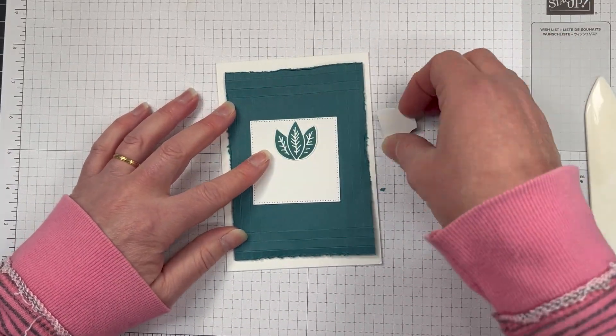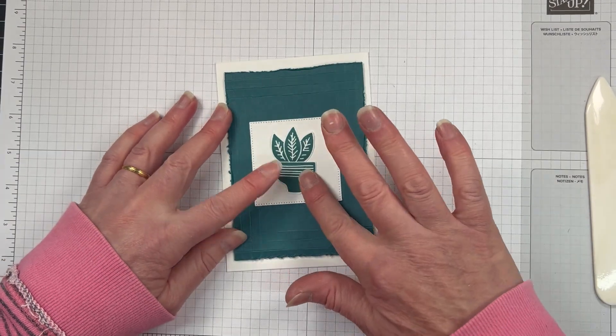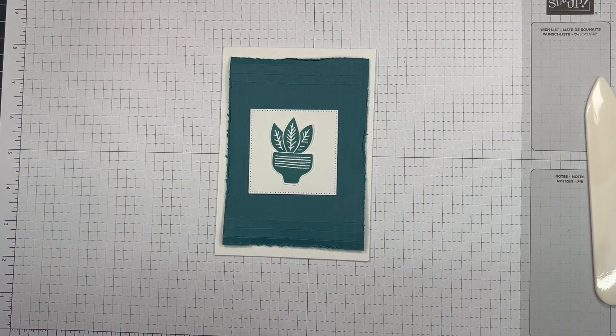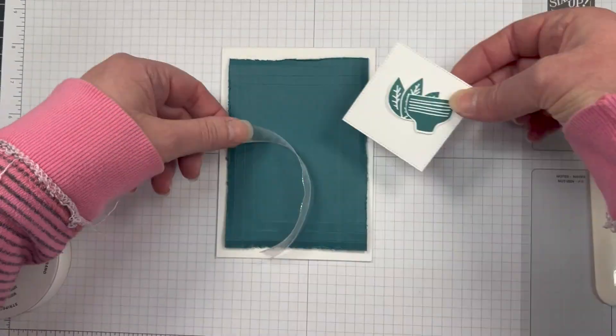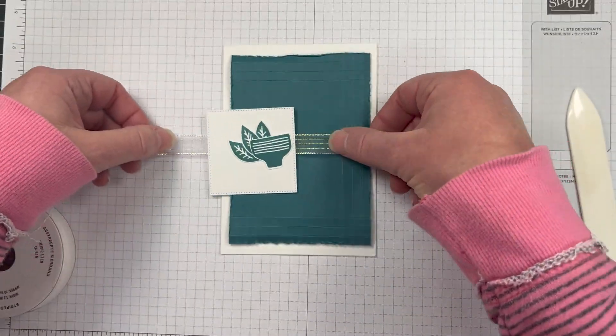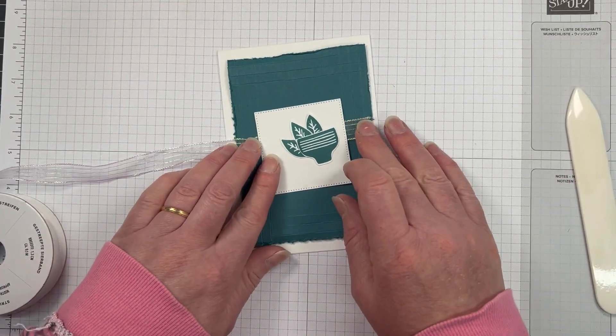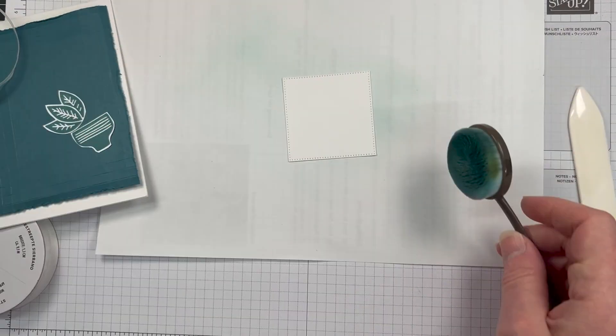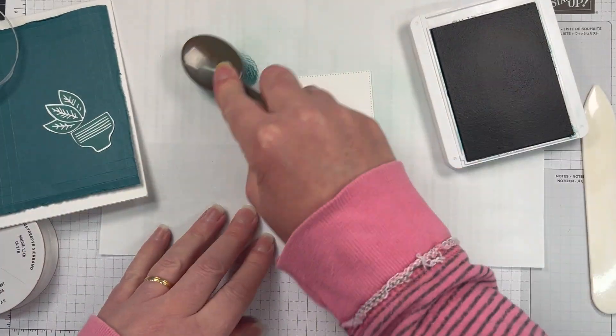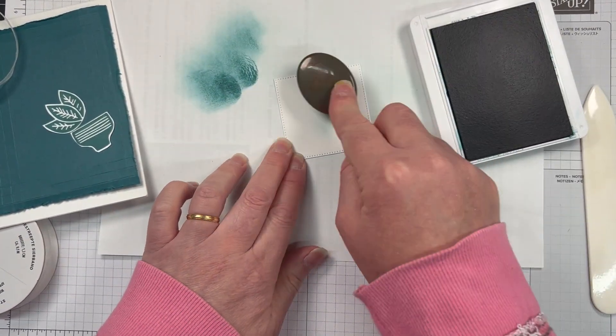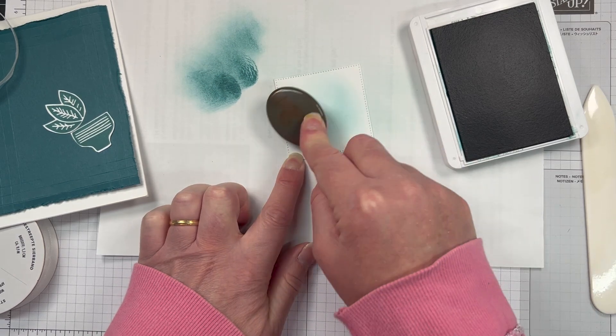So I really love how much that distressing the edges really pops that Pretty Peacock card off the top of the page. And then we have some of this gorgeous ribbon—now I think it's iridescent ribbon, I think that's what it's called. It's in the annual catalog, it's really pretty, and it also adds a little bit of extra shine to the card as well.